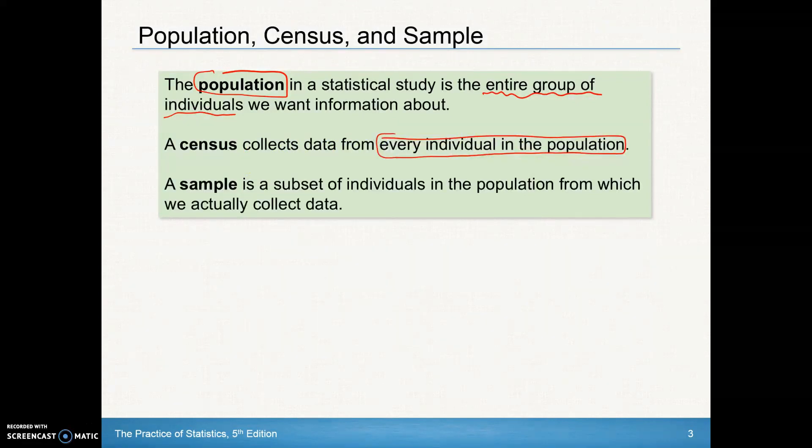So this definition is actually changing a little bit, but a true census does ask everybody in the population. Though the census we do in the United States every ten years is not truly a census because we do not get data from every individual in the population, though we attempt to. A sample is just a subset of the individuals in the population from which we actually collect data.